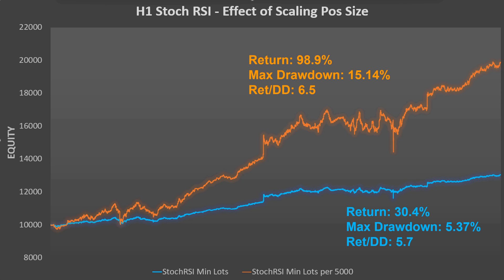15% drawdown is realistically the most that the majority of traders would be able to tolerate. Many traders think they could tolerate more than this, but when you're actually in that kind of drawdown, that's often a different matter. I wouldn't recommend that this strategy in its current form use a position sizing strategy any more aggressive than this — certainly not until some of the larger drawdowns have been removed with the introduction, for example, of a stop loss.